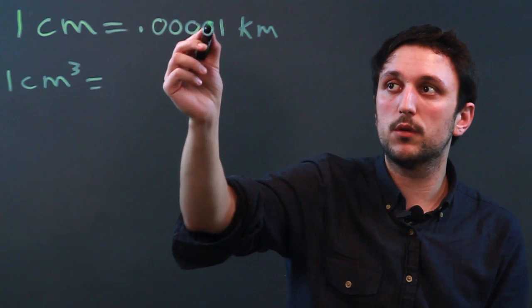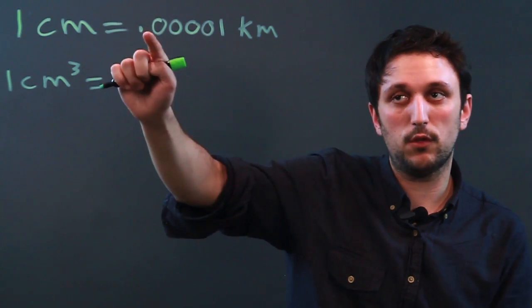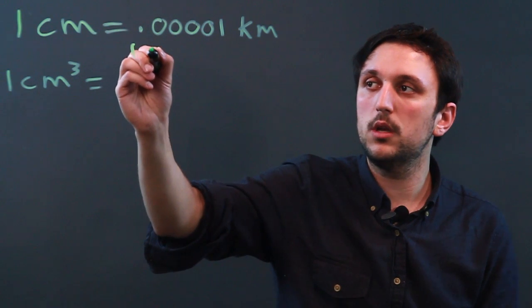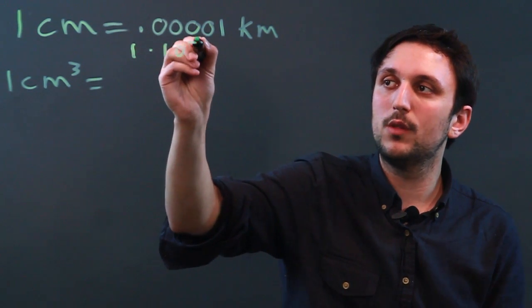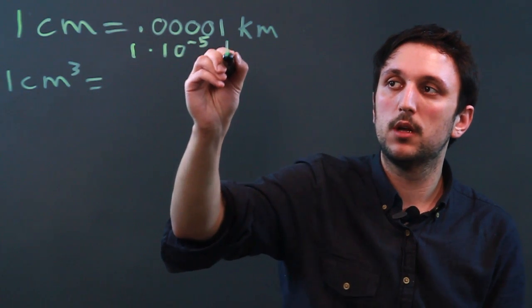So .00001, that's five places to the right of the decimal. So that's one times ten to the negative fifth km.